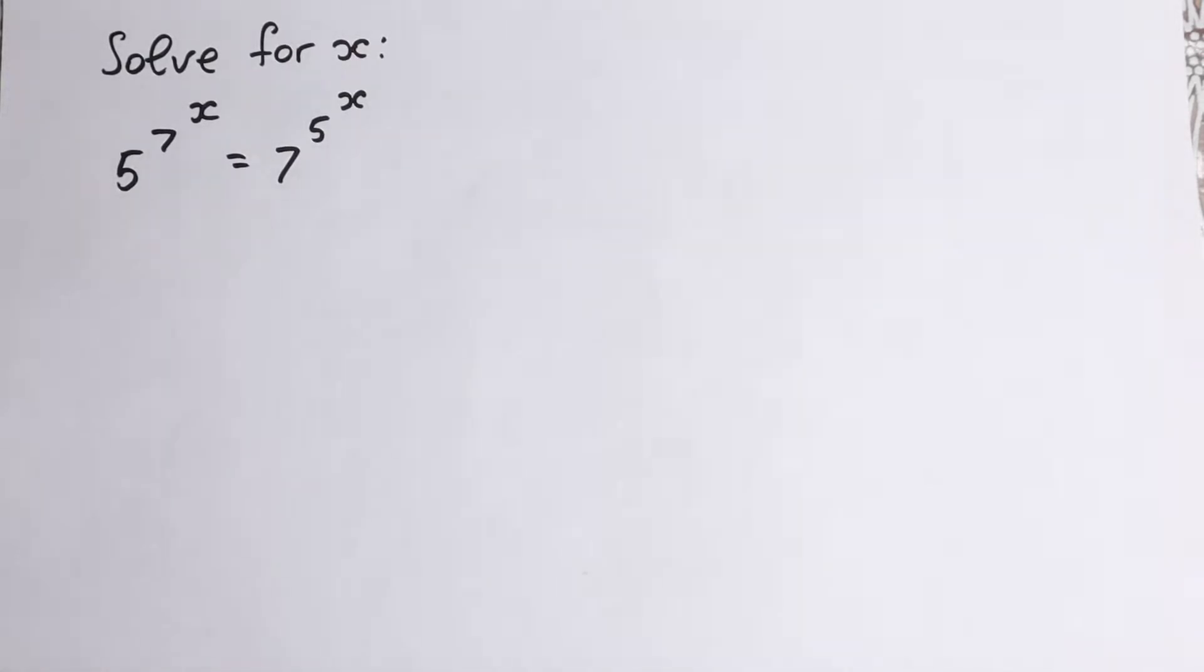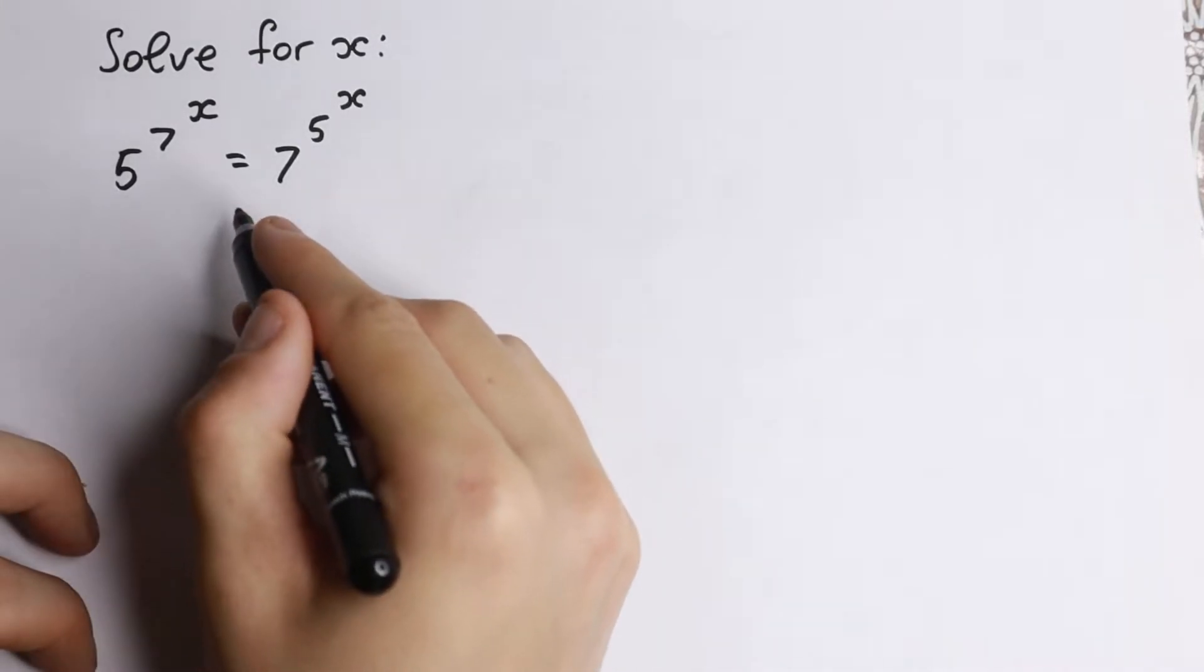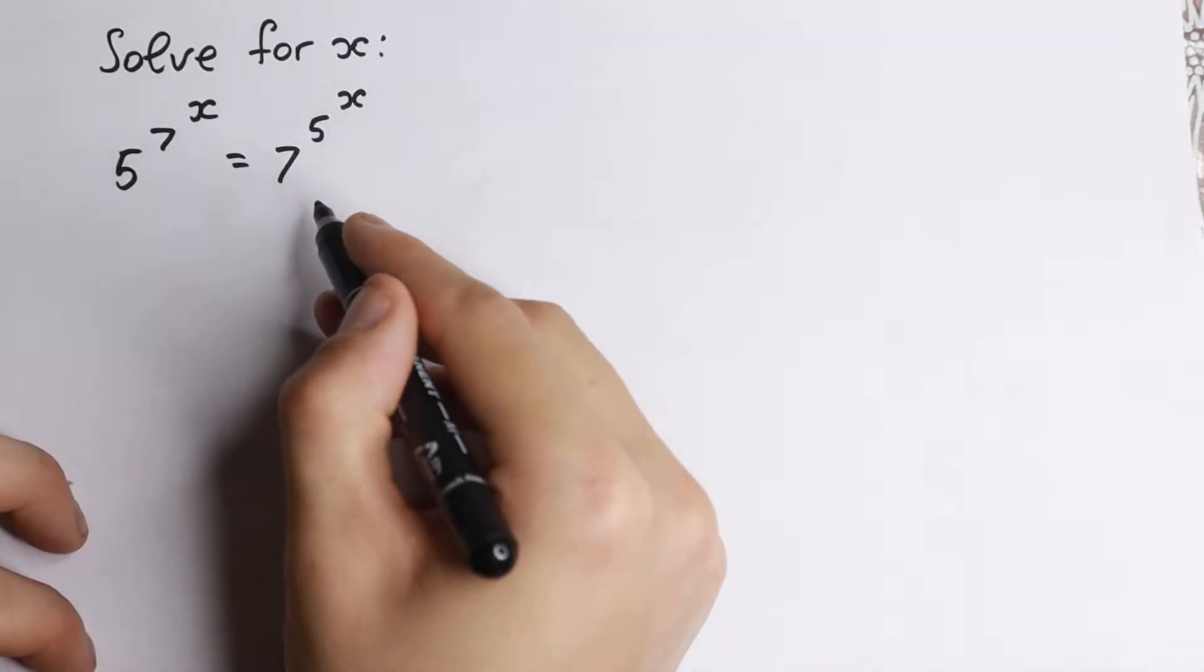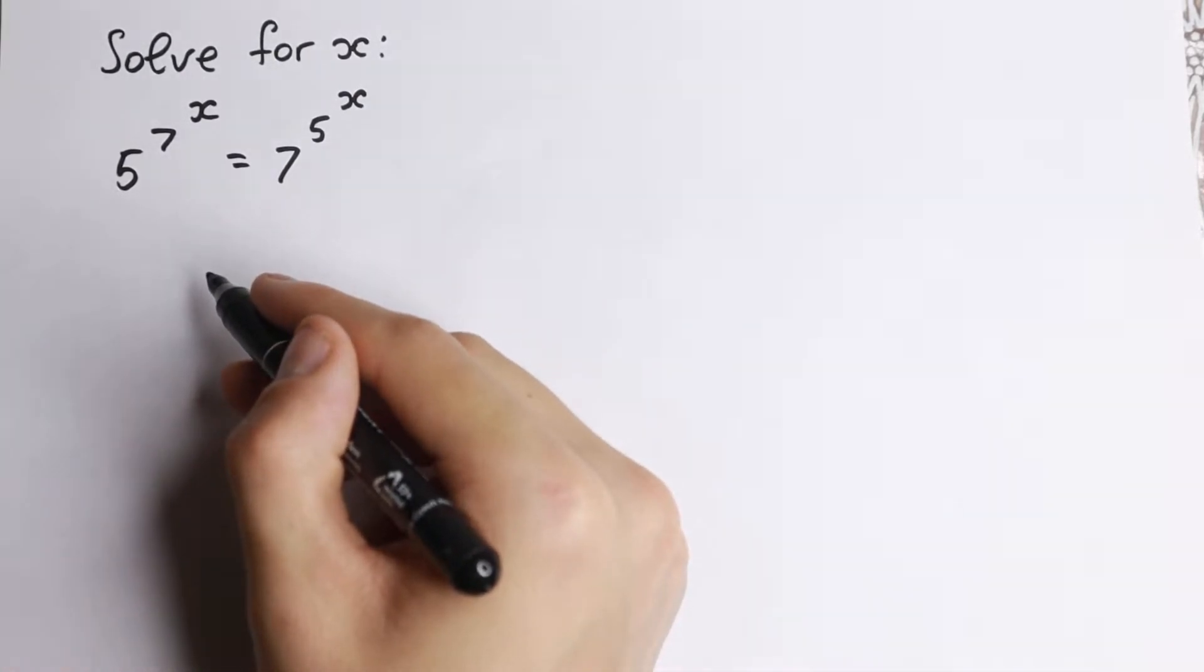Hello my friend, happy to see you here and welcome back to MathMode. Really interesting exponential equation today. We have 5 to the power 7 to the power x equal to 7 to the power 5 to the power x. And right here we need to find our x.